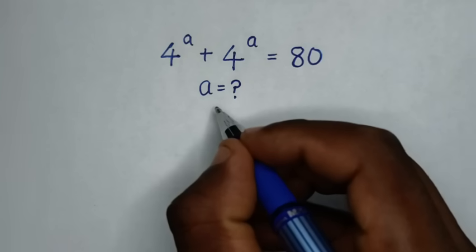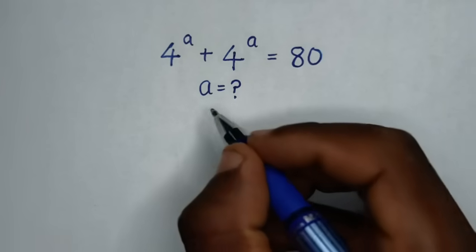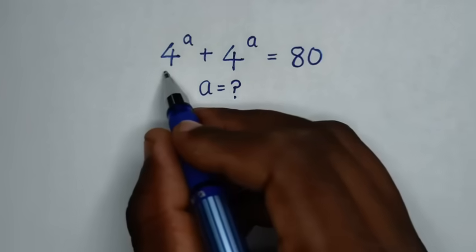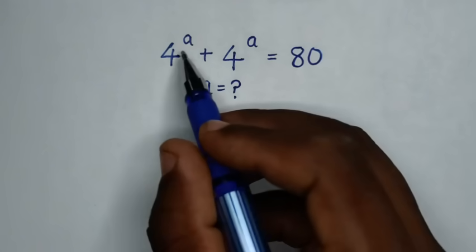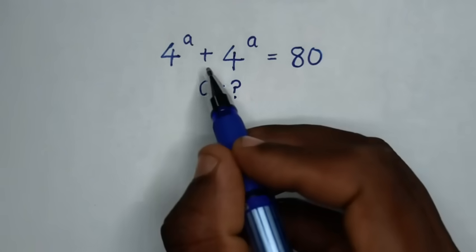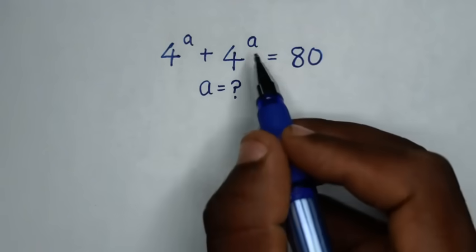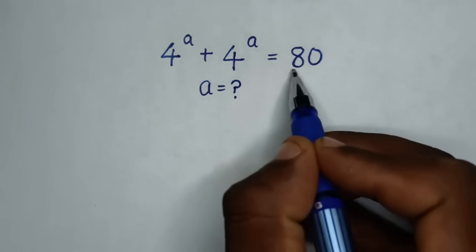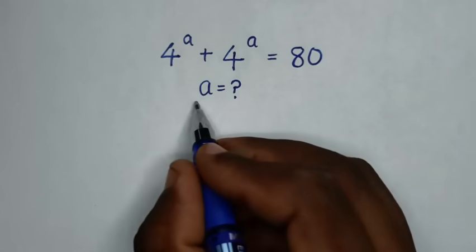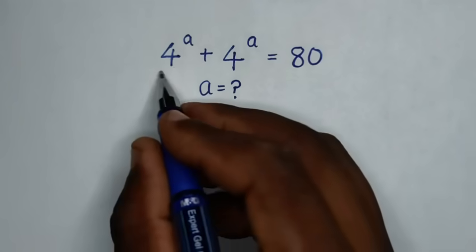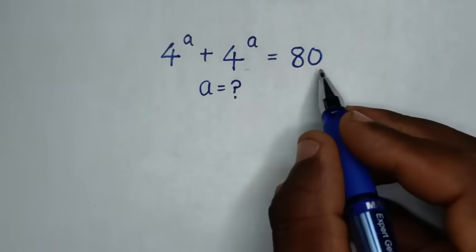Hello, you are welcome to solve this math problem, which is 4 power a plus 4 power a is equal to 80. We need to find the value of a from this equation.